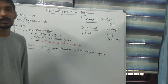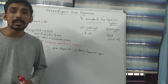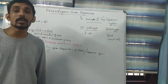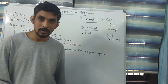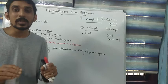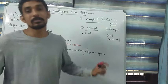Welcome to a new video tutorial on heterologous gene expression. In biotechnology and genetic engineering we have two main terminologies. One is called homologous gene expression and the second one is called heterologous gene expression. Homologous gene expression means the expression of a particular gene within the cell where it was — that is, expression within its natural environment.